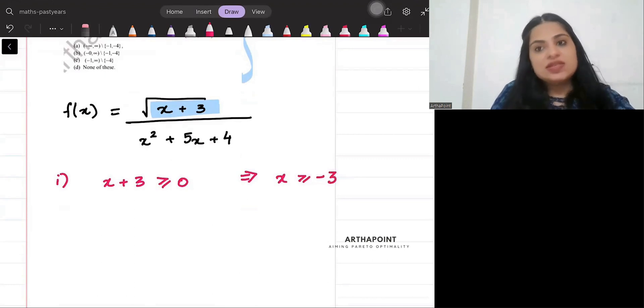x plus 3 should be strictly greater than or equal to 0. This means that x should be greater than or equal to minus 3.